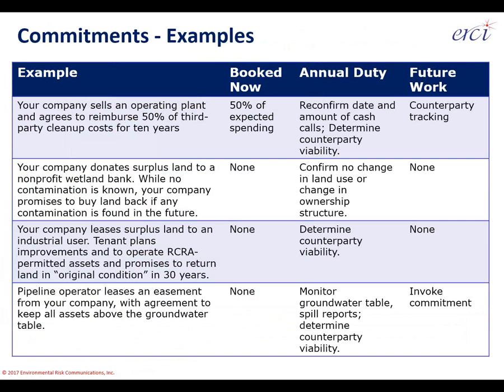First example: your company sells an operating plant and agrees to reimburse the buyer 50-50 for third-party cleanup costs over the next 10 years. What would you book? 50% of expected spending. You've been managing 100% until now, so you have a good idea of medium-term spending over 10 years. Your annual duty is to work with the buyer to reconfirm dates and amounts of cash calls, and determine the buyer's financial health. If the buyer defaults, any subsequent spills or environmental regulations could be on your dime — that's part of a commitment.